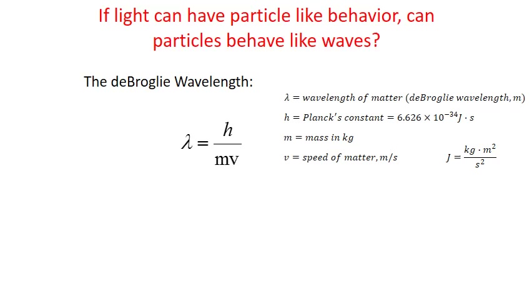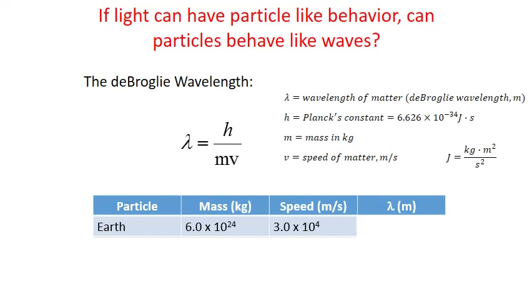Let's apply this equation to some different types of matter and see what we get for wavelength. We'll start with the Earth. The Earth is pretty massive — it's 6 times 10 to the 24 kilograms, moving at a speed of 3 times 10 to the 4th meters per second around the Sun. If we plug both of these values into our equation for the de Broglie wavelength, they go in the denominator of that ratio. Two pretty large values in the denominator makes for a very small result. The de Broglie wavelength for the Earth is 4 times 10 to the negative 63 — well beyond our measurement capabilities.